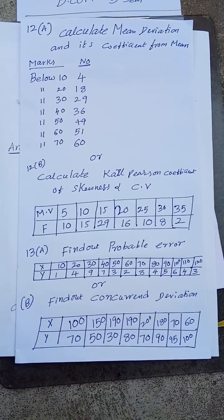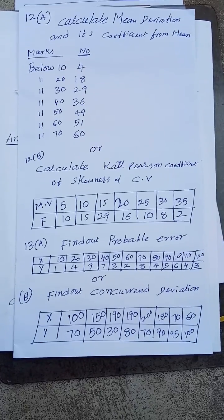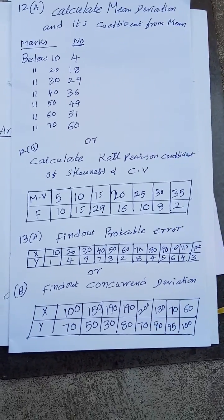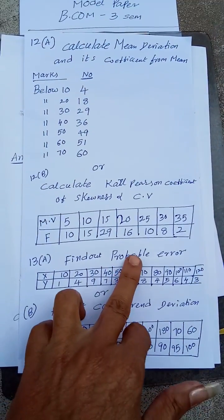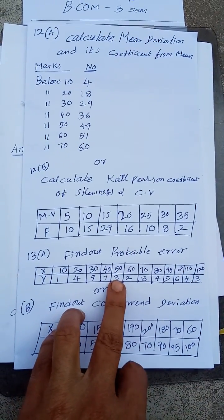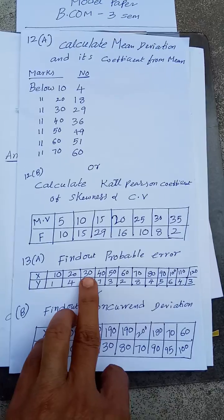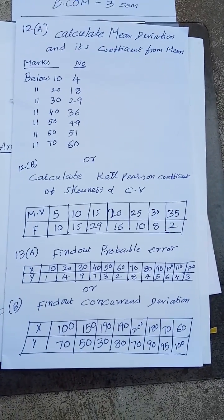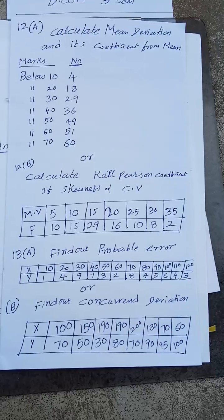If you have any doubts, feel free to ask me. Here I have given concurrent deviation. When you have to find out the probable error, you have to calculate correlation. The formula is: PE = 0.6745 × (1 − r²) ÷ √n.